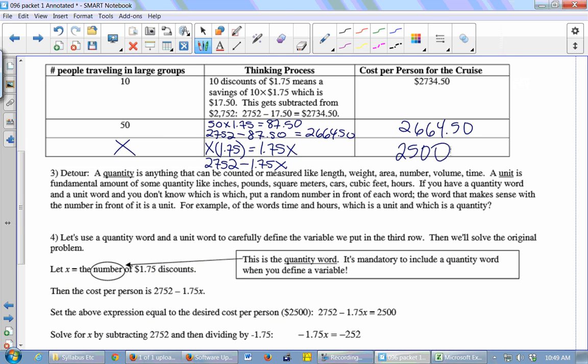So a quick detour. A quantity is anything that can be counted or measured, like length, weight, area, number, volume, time. A unit is a fundamental amount of some quantity - inches, pounds, square meters, cars, cubic feet, hours. If you have a quantity word and a unit word and you don't know which is which, put a random number in front of each word, and the word that makes sense with the number is a unit.